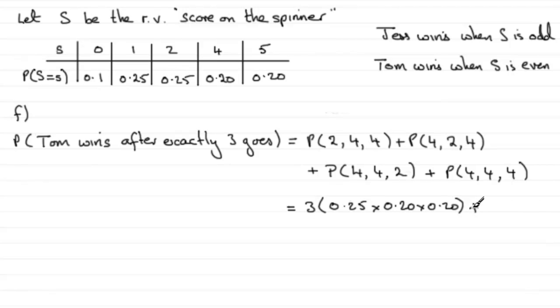And then we've got plus the probability of getting a 4 3 times over. So it's going to be 0.20 times 0.20 times 0.20 or 0.20 cubed. And if you work that out, what you get is 0.038.